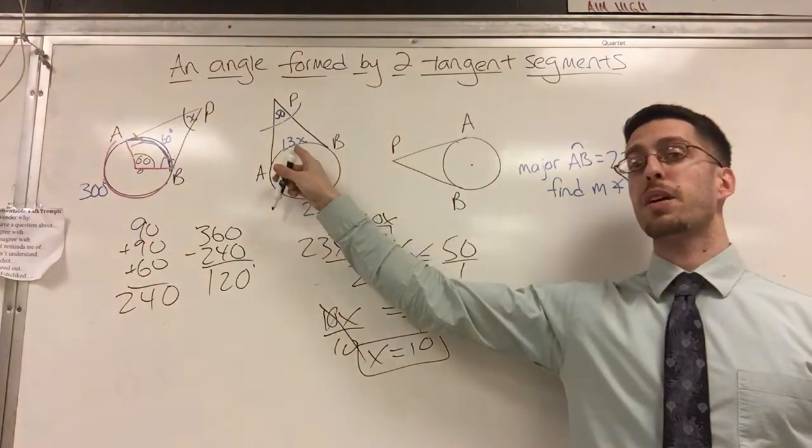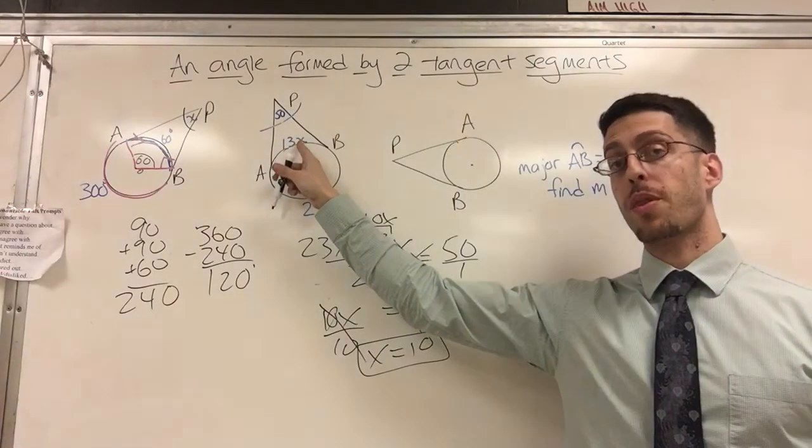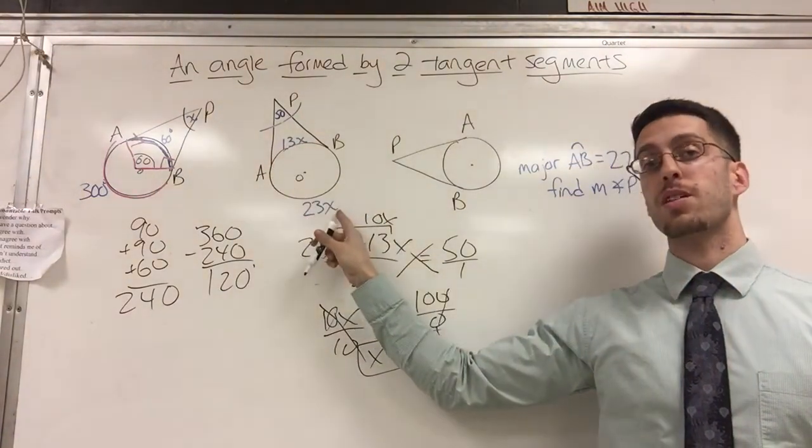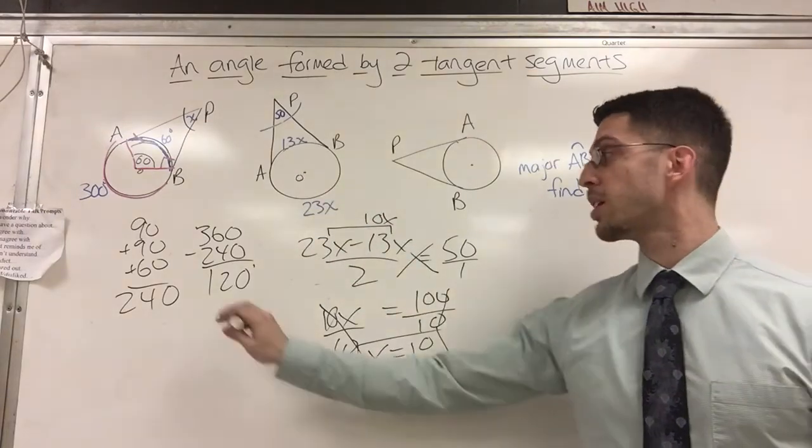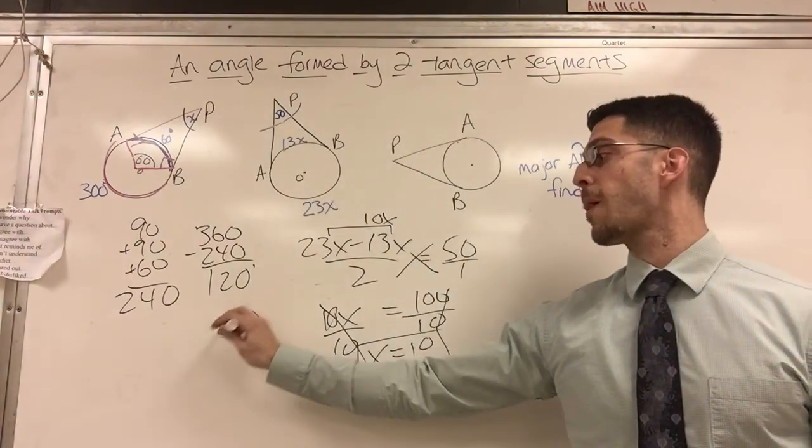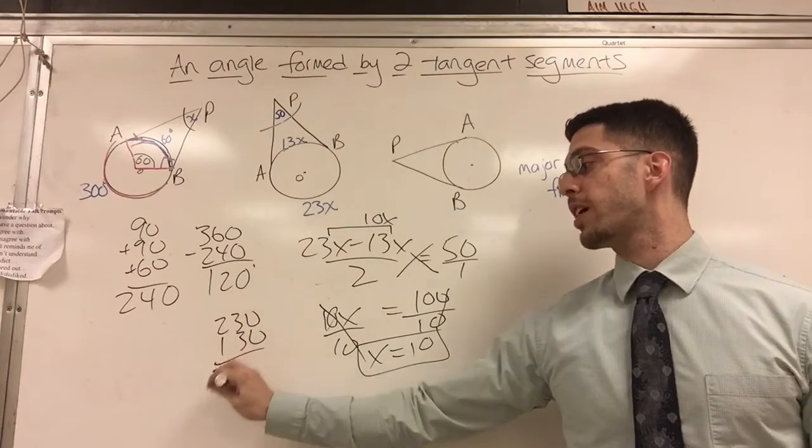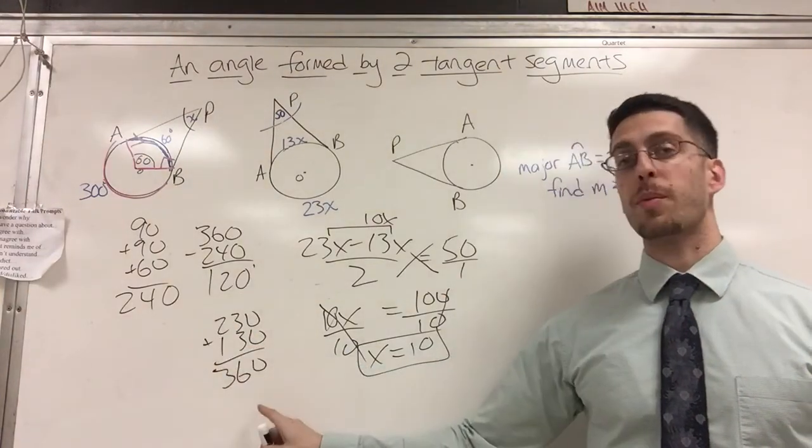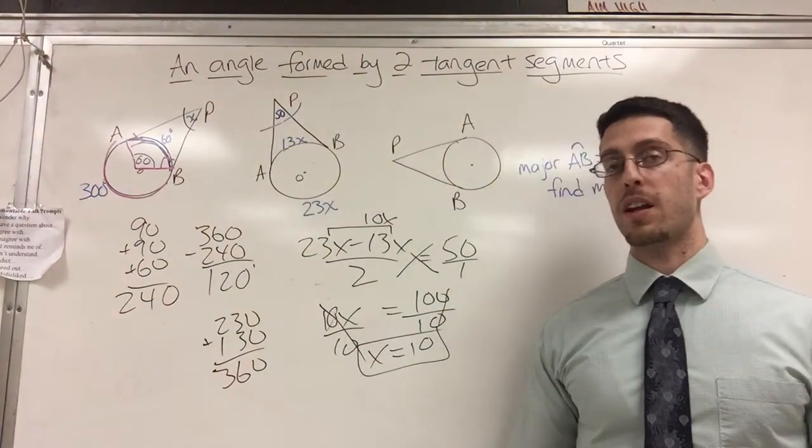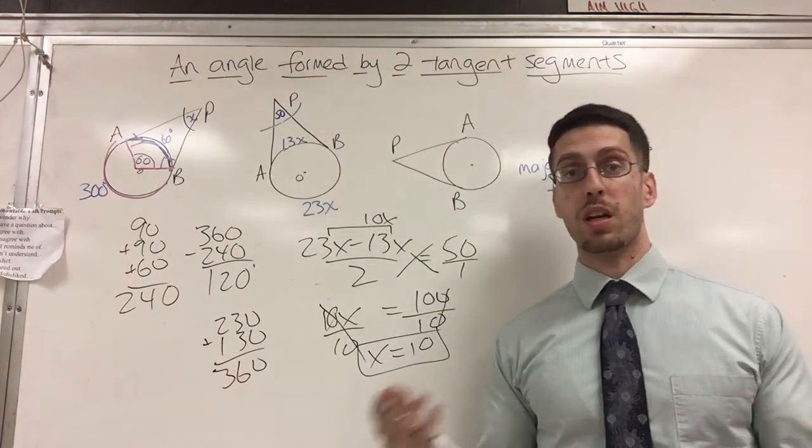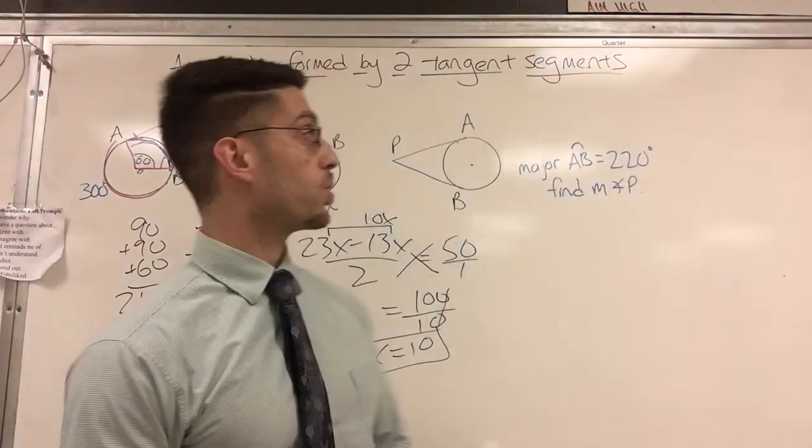And x equals 10. So then you can plug it in here, making this 13 times 10, 130. 23 times 10 is 230. Together, I hope that makes 360. Let me check. 230 plus 130. Definitely 360, so I'm good. Technically, my trick about drawing the radius would actually work, and I would have no problem with you doing it either way. Take a look at the last one.